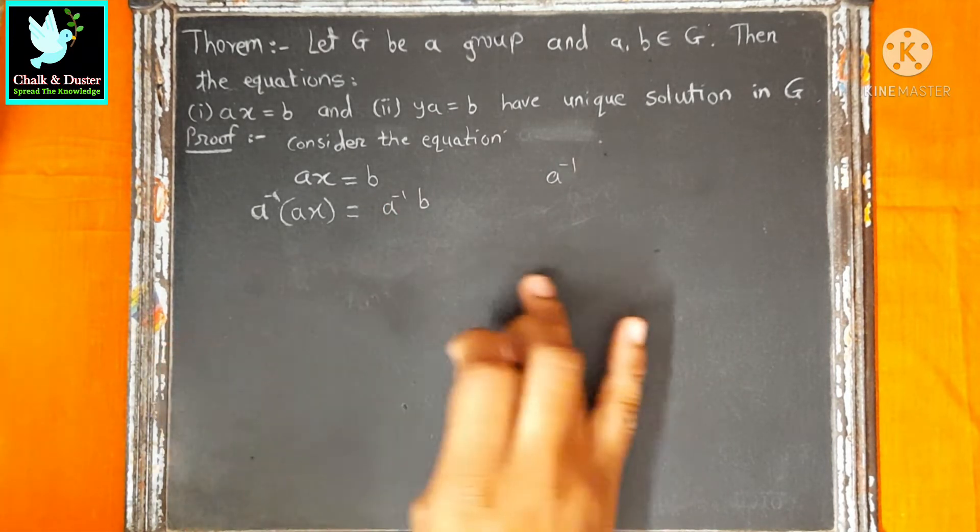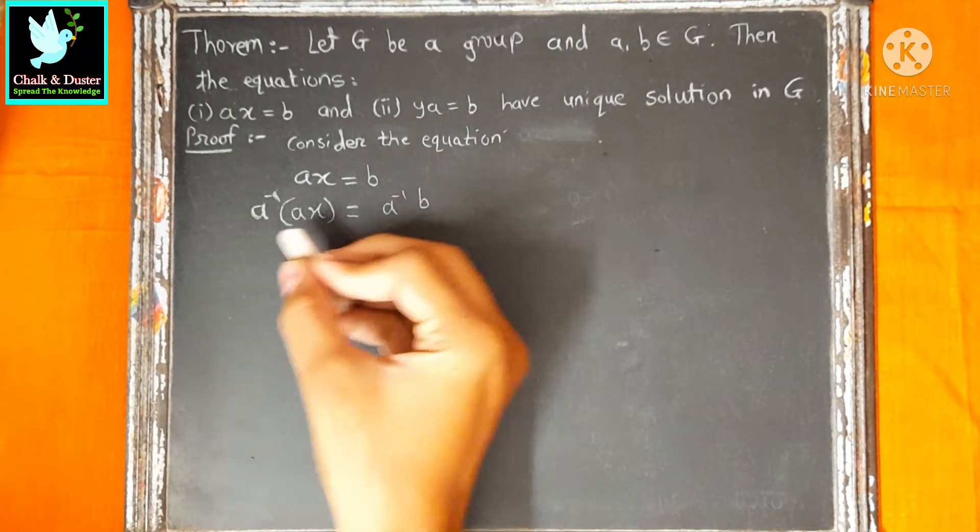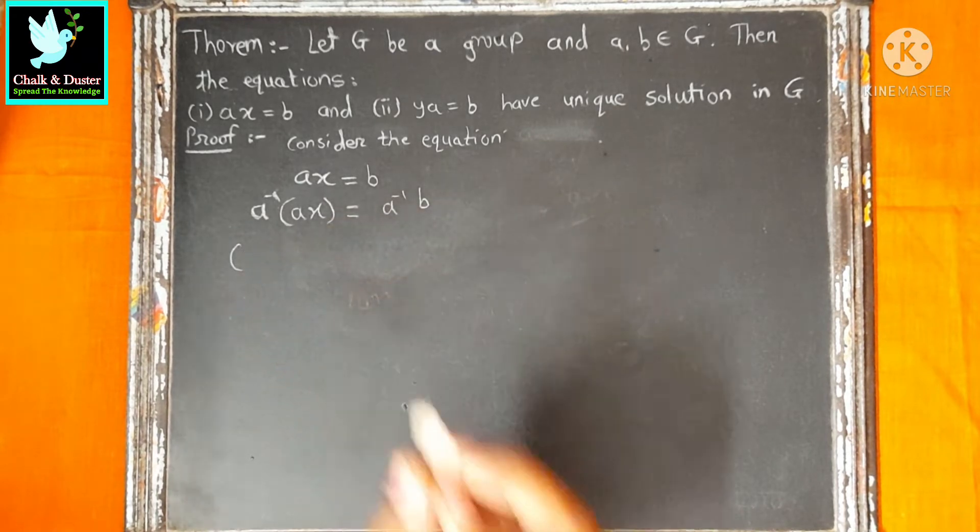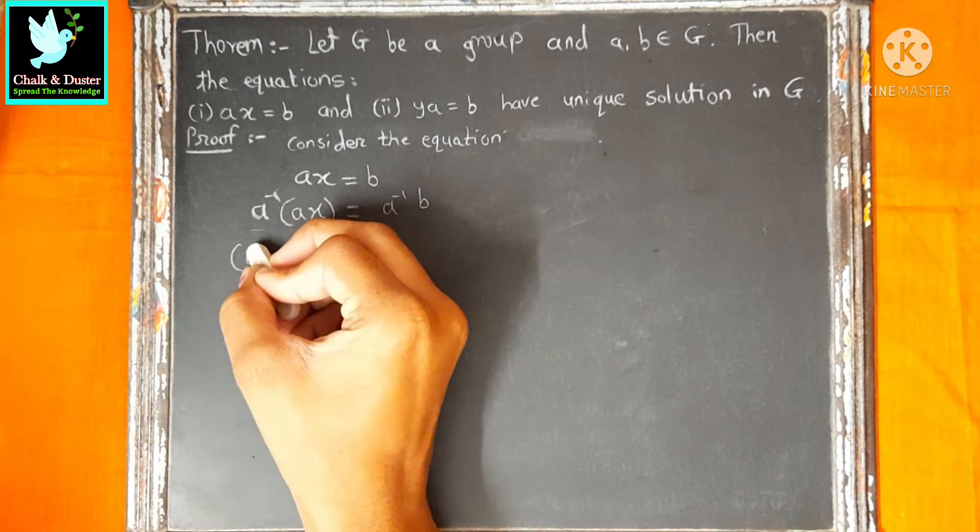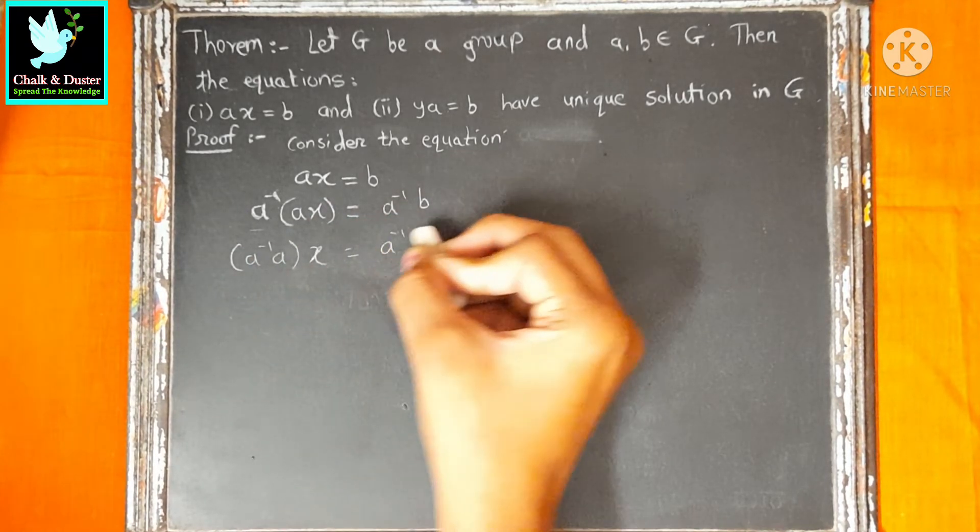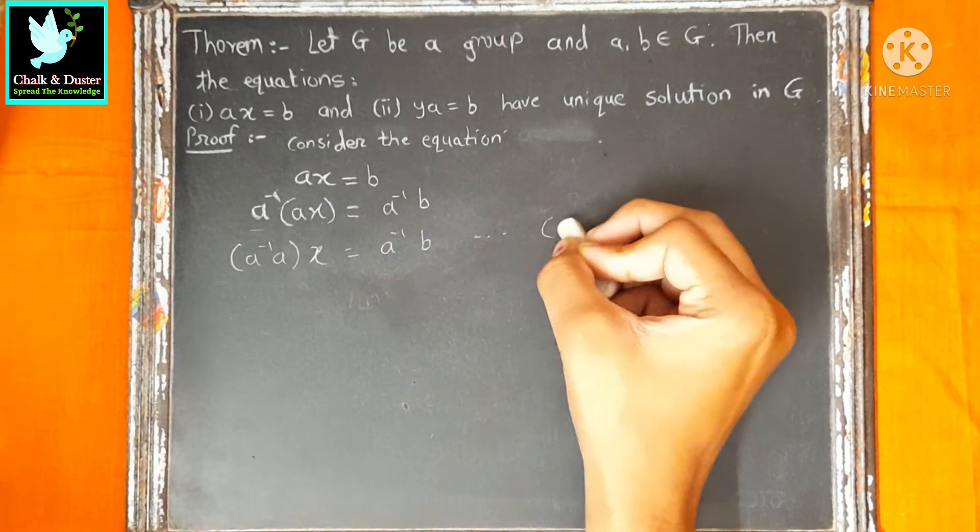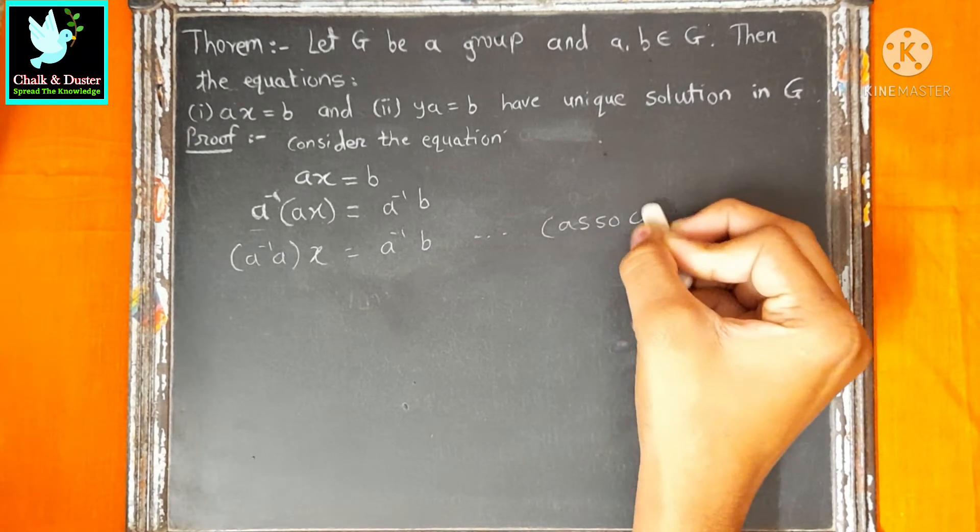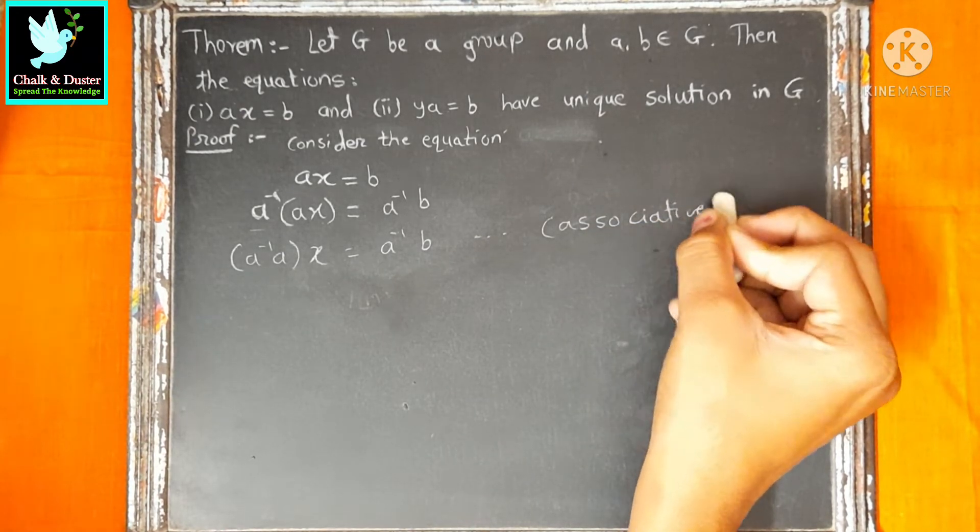We have A inverse pre-multiply by A. Now, which property we will use? We will use associative property. So, A inverse into A into X is equal to A inverse into B.